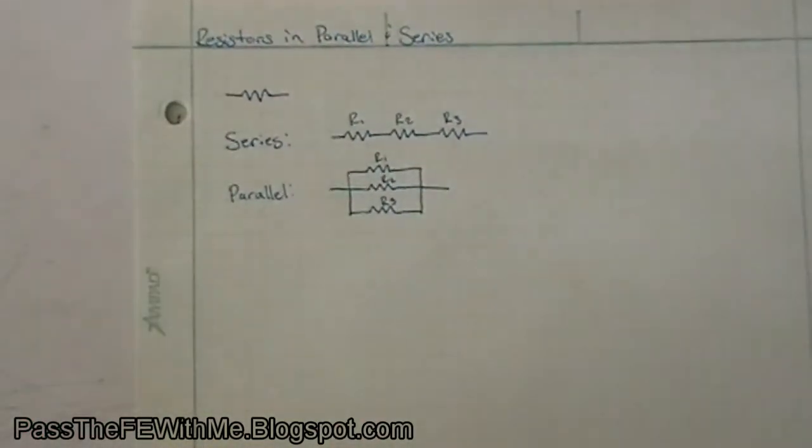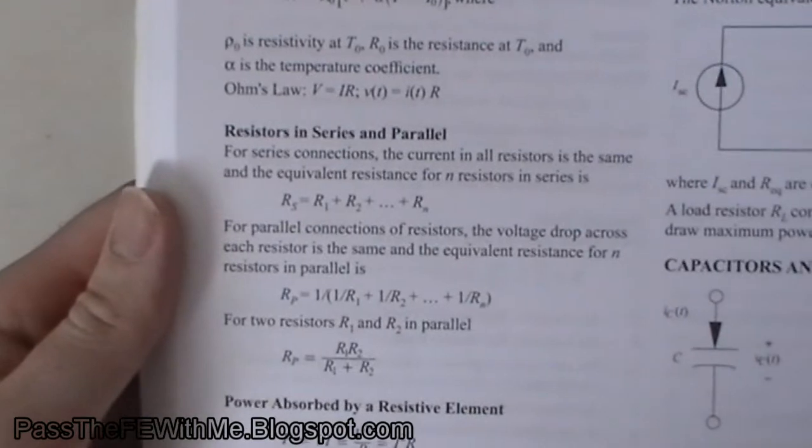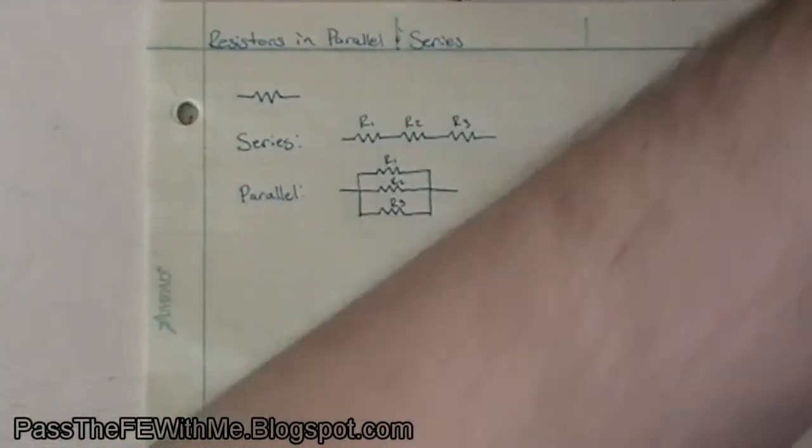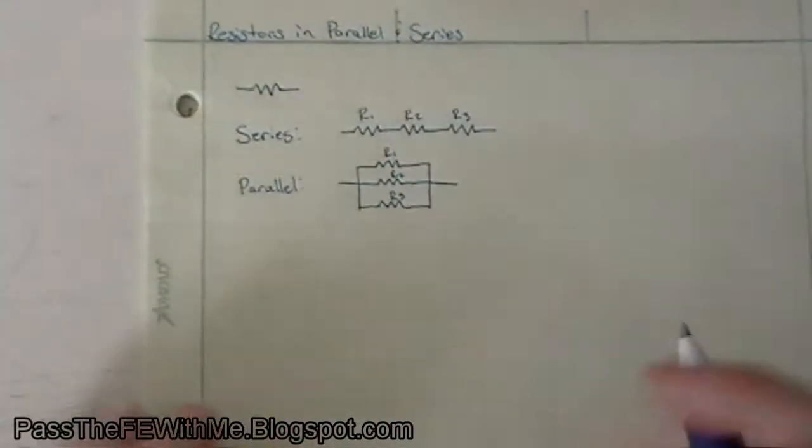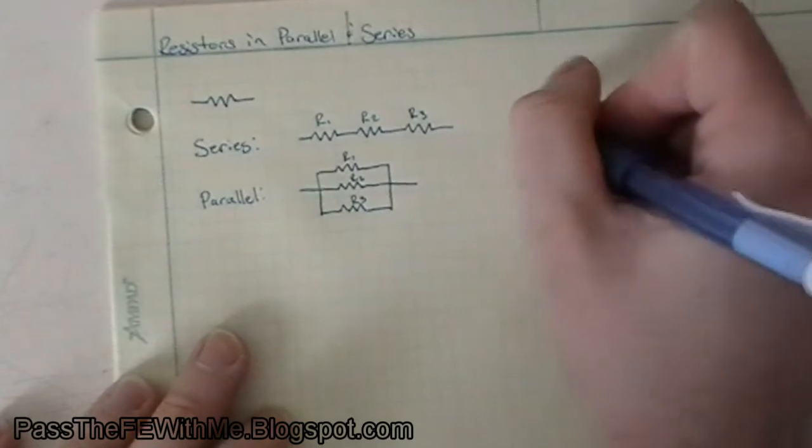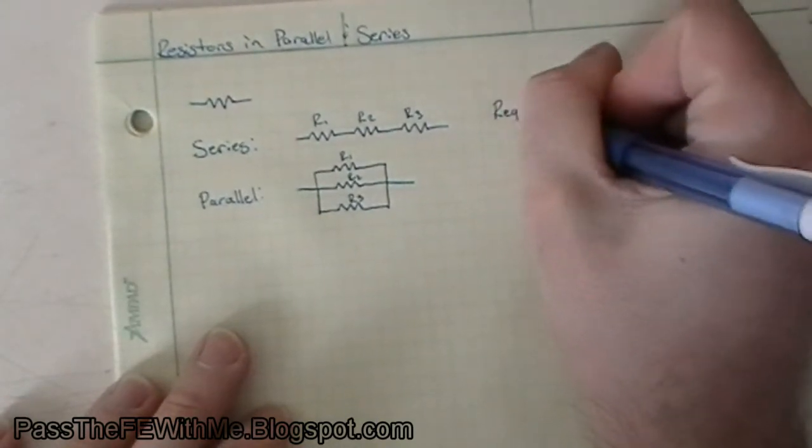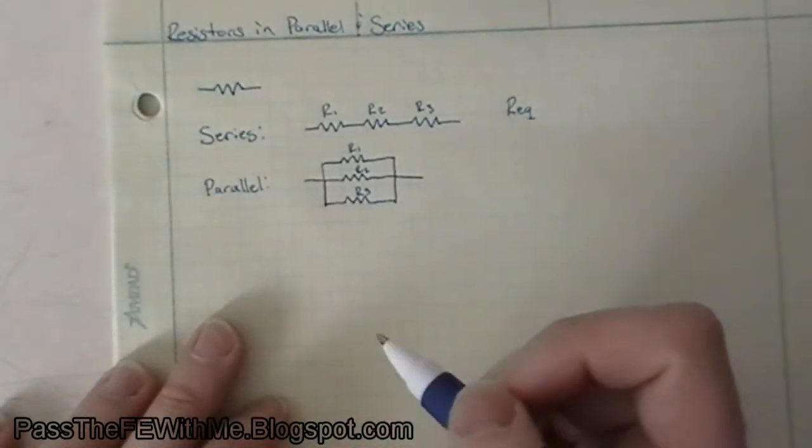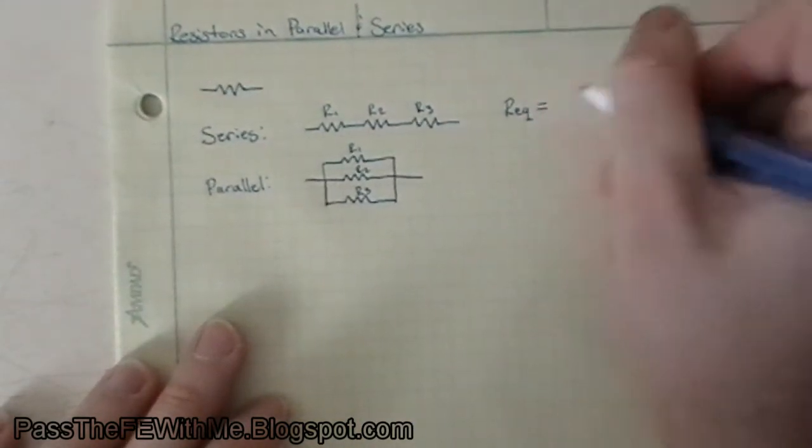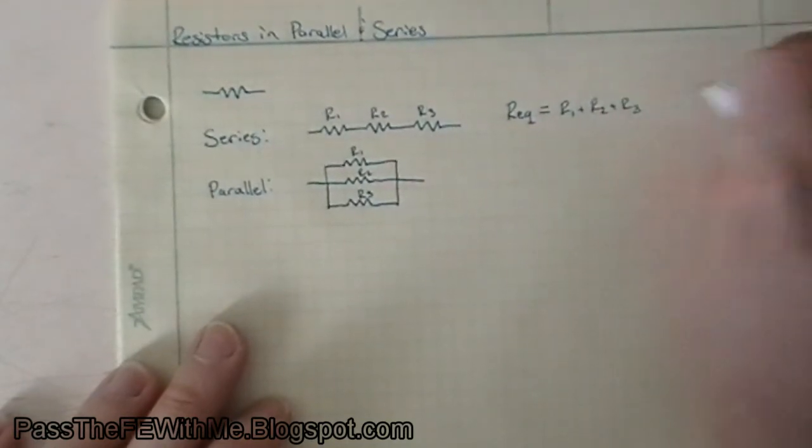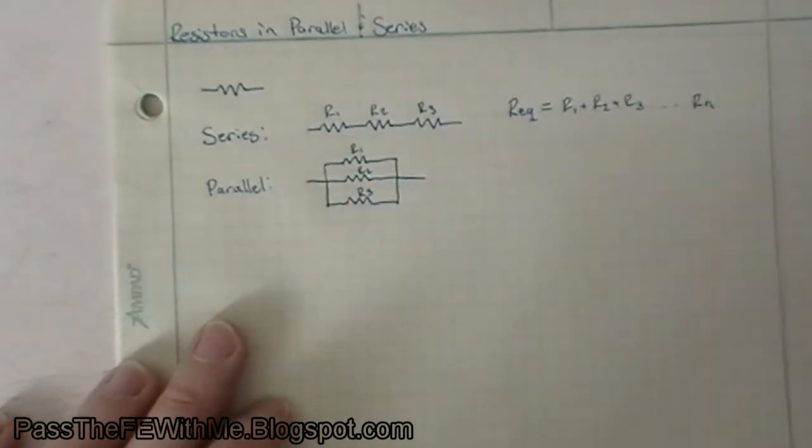So the formula for this is on page 194 of the supplied reference manual. You can see right here about the middle of the page on the left-hand side. And so for our series of resistors, we're just adding them up. It's really simple. REQ, this is the equivalent resistance that you're going to model this series of resistors as. Equals R1 plus R2 plus R3 in this case, or if you have N resistors, Rn.